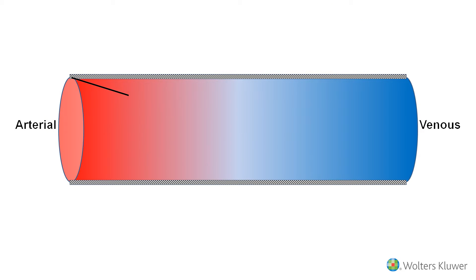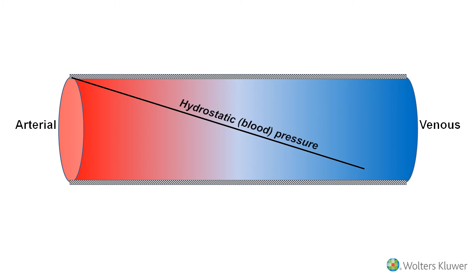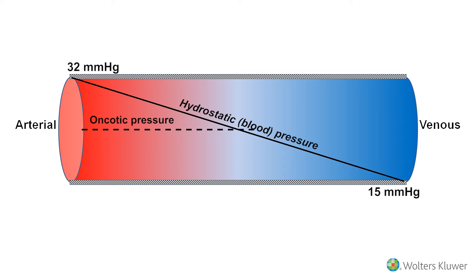In this figure, the hydrostatic pressure in the capillaries is represented by this diagonal line, which ranges from 32 mmHg at the arterial end to 15 mmHg at the venous end. The oncotic pressure of the blood, represented by the dashed line, is constant at about 25 mmHg.